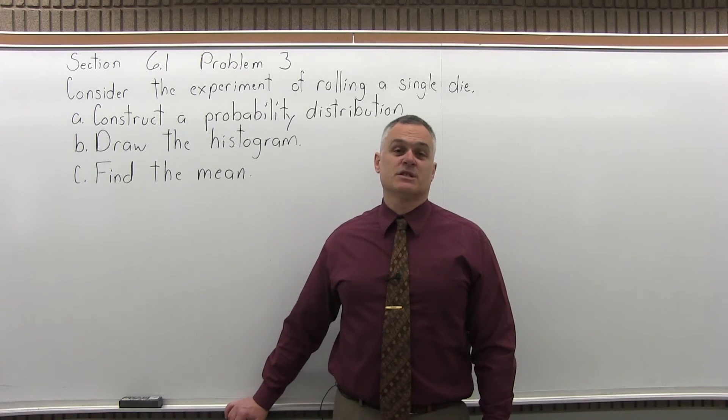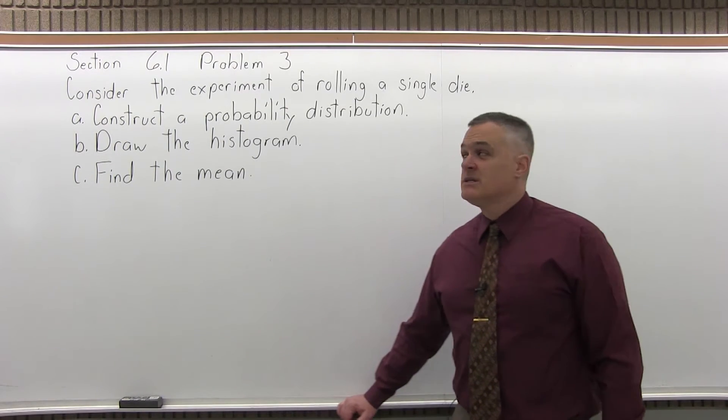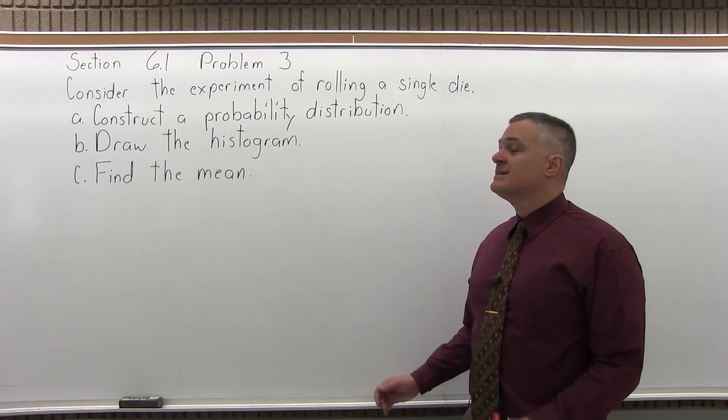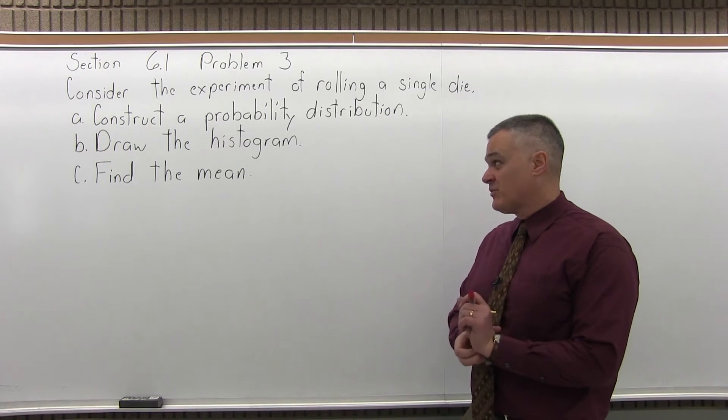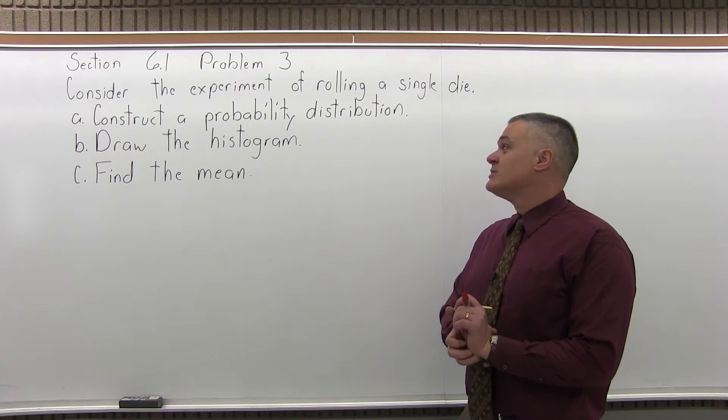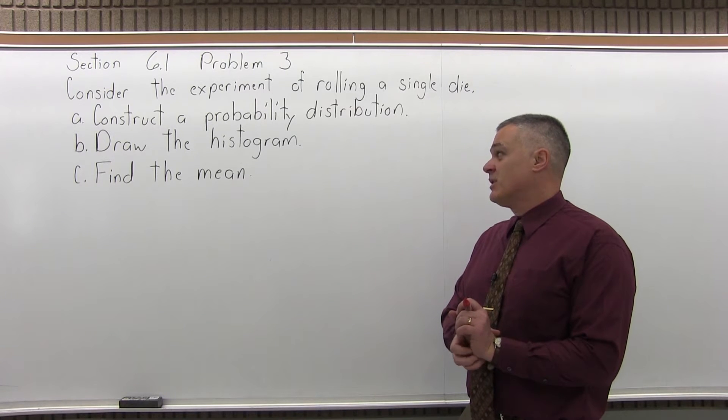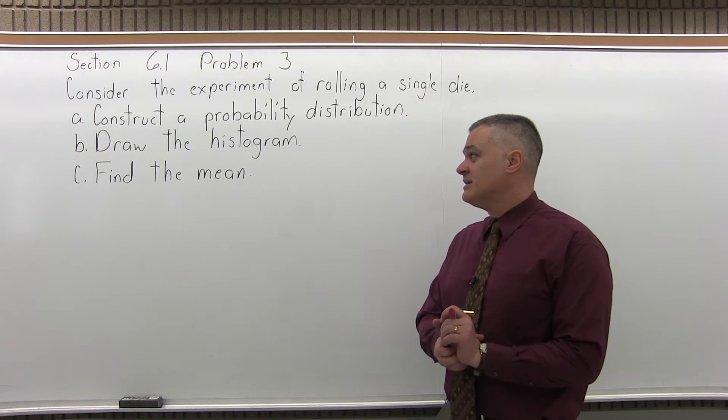This is Section 6.1, Problem number 3. It says, consider the experiment of rolling a single die, not a pair of dice, a single die. A, construct a probability distribution. B, draw the histogram, and C, find the mean.